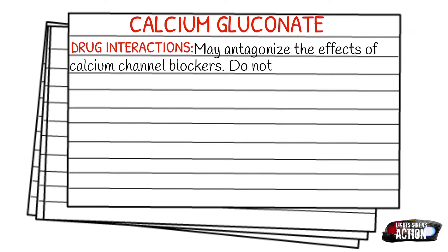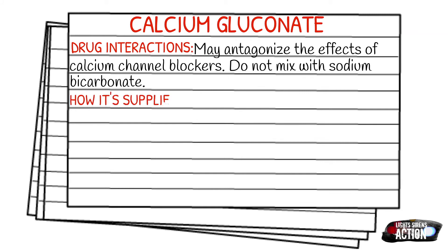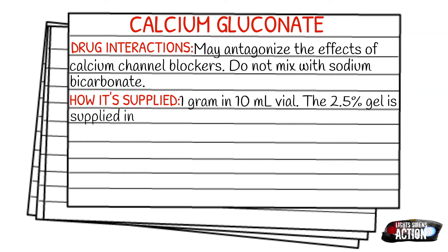How is it supplied? It is in a 1 gram in 10 milliliter vial. But if you're using the gel for topical burns, it's going to be a 2.5% gel and it's supplied in a 25 gram tube.